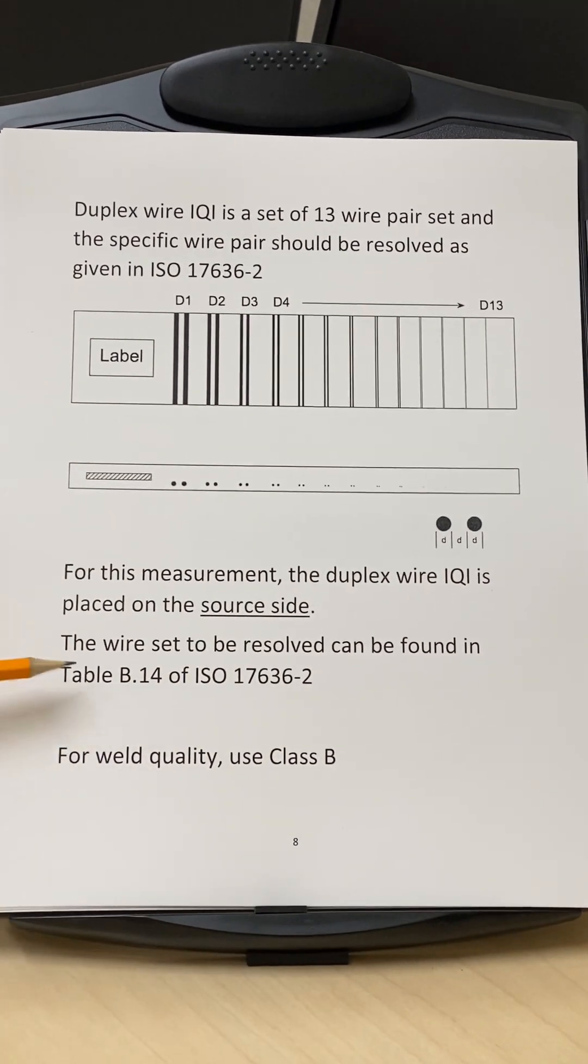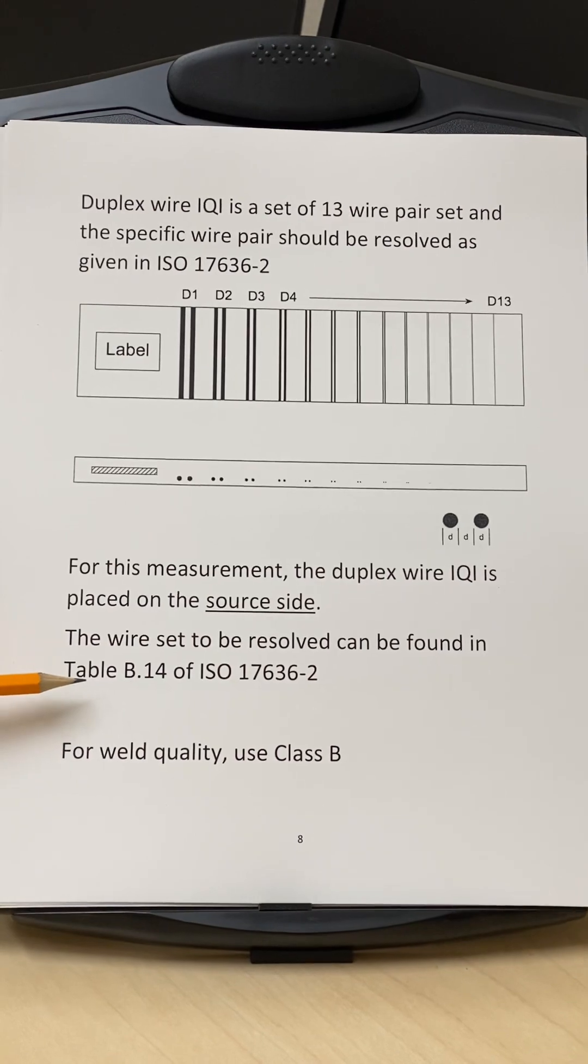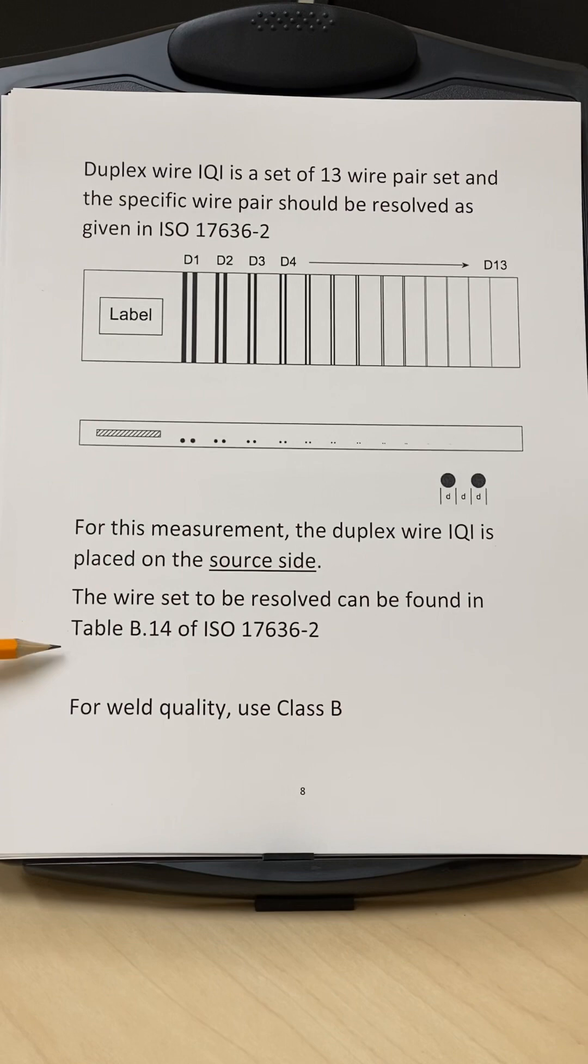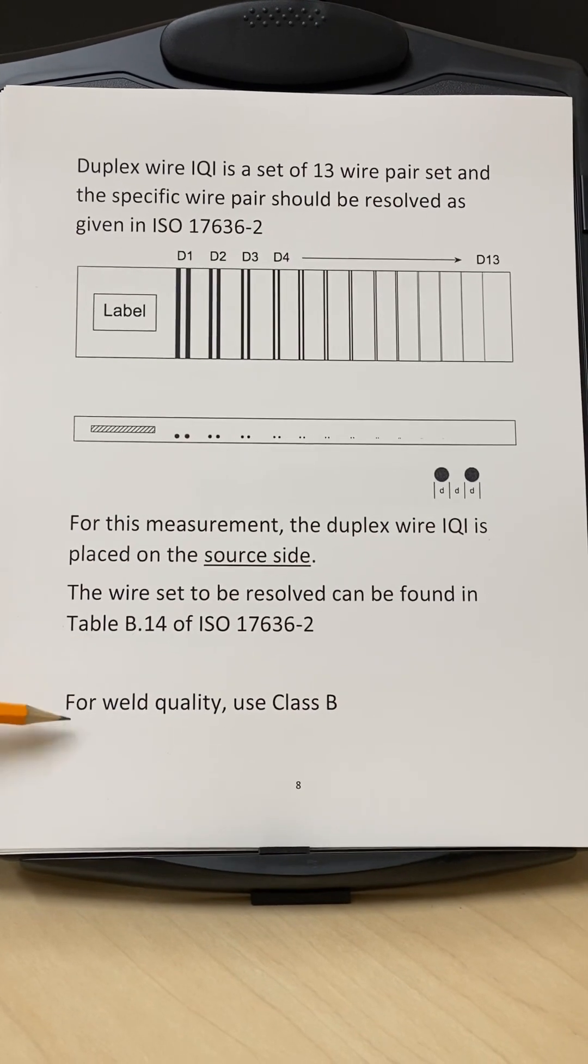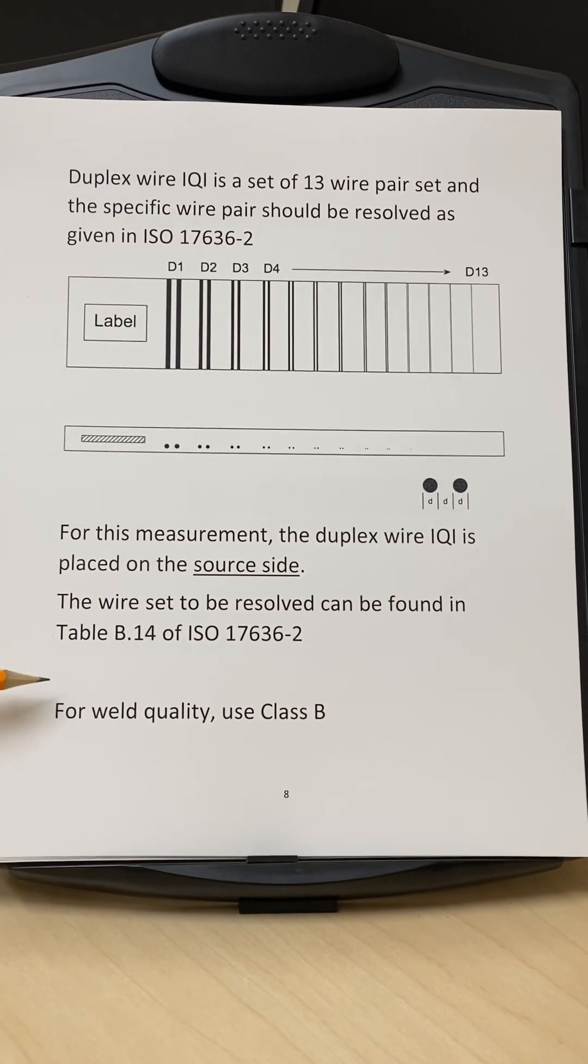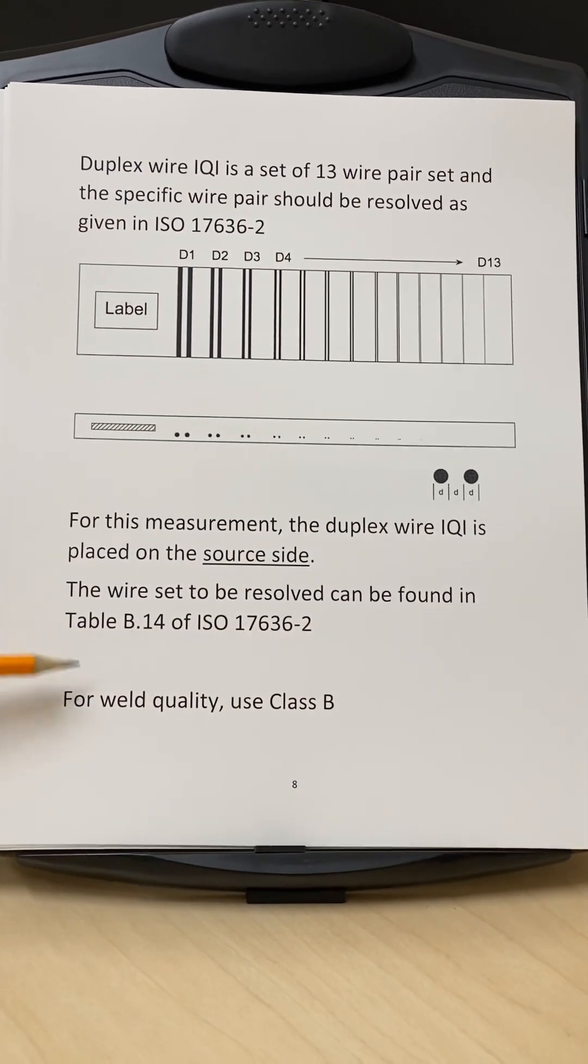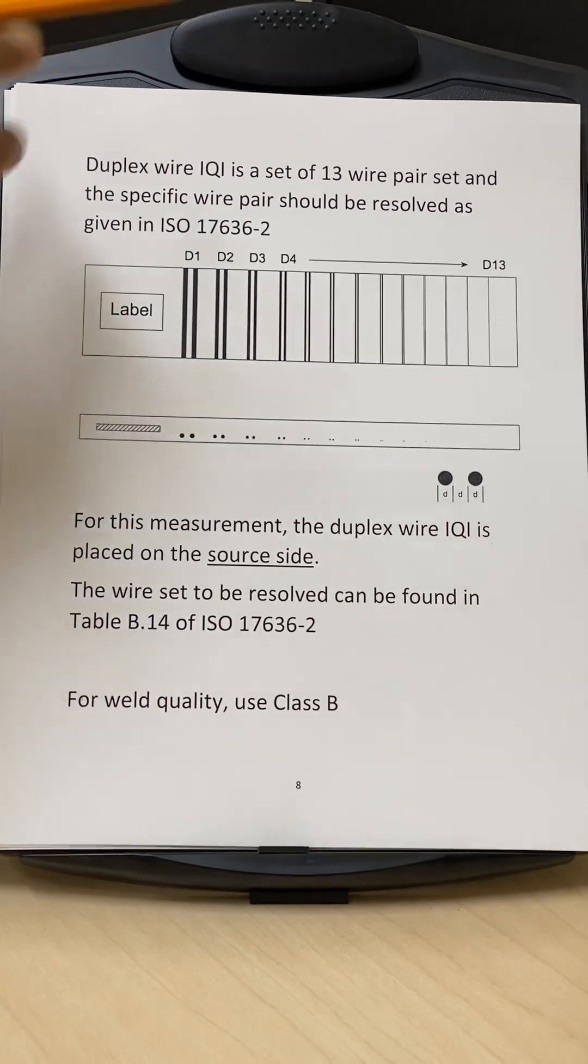Now in ISO 17636-2, there are two classes, class A and class B for radiography. And for weld quality, please use class B. And that class B is given in table number B14 of this ISO.